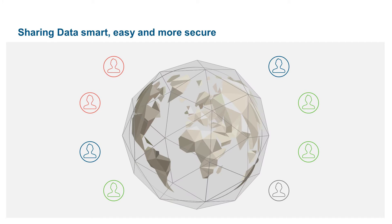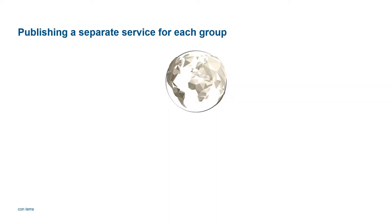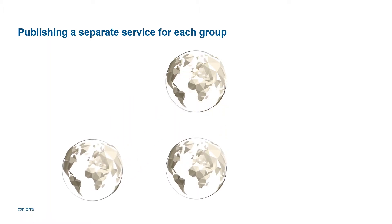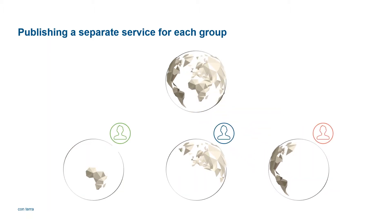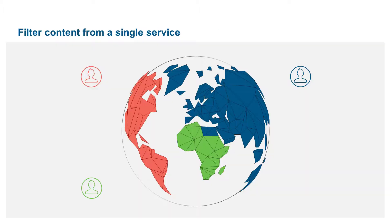Secondly, Security Manager can help you reduce the efforts and resources required to serve different content to various user groups. So instead of publishing services redundantly — one service for each user group providing exactly the content that group shall get access to — Security Manager lets you provide a single service and just filter access for your different user groups. So you only have one service in place instead of lots of redundant services.